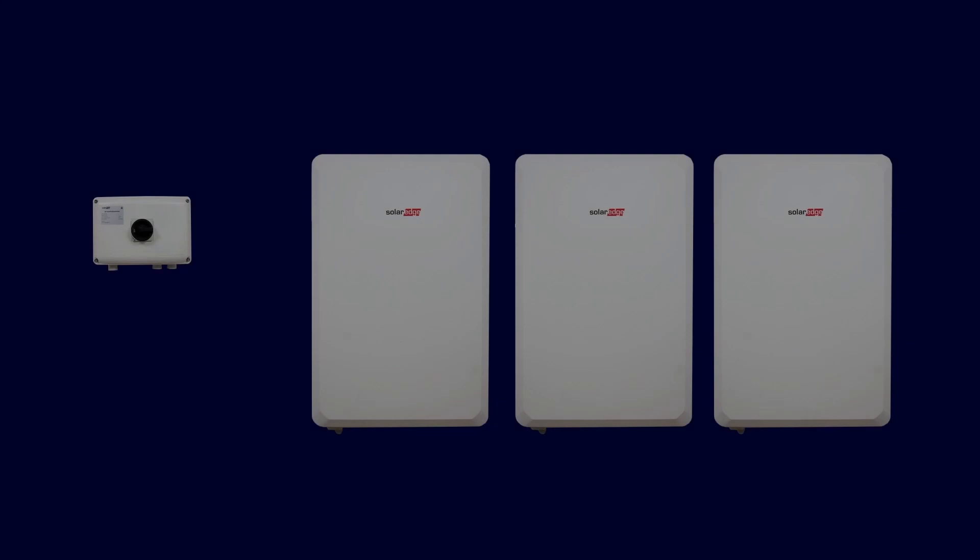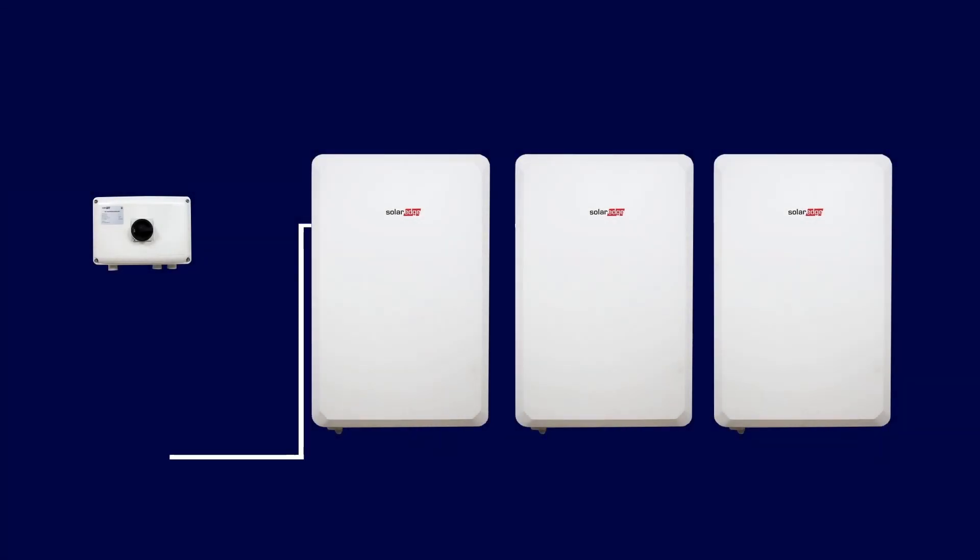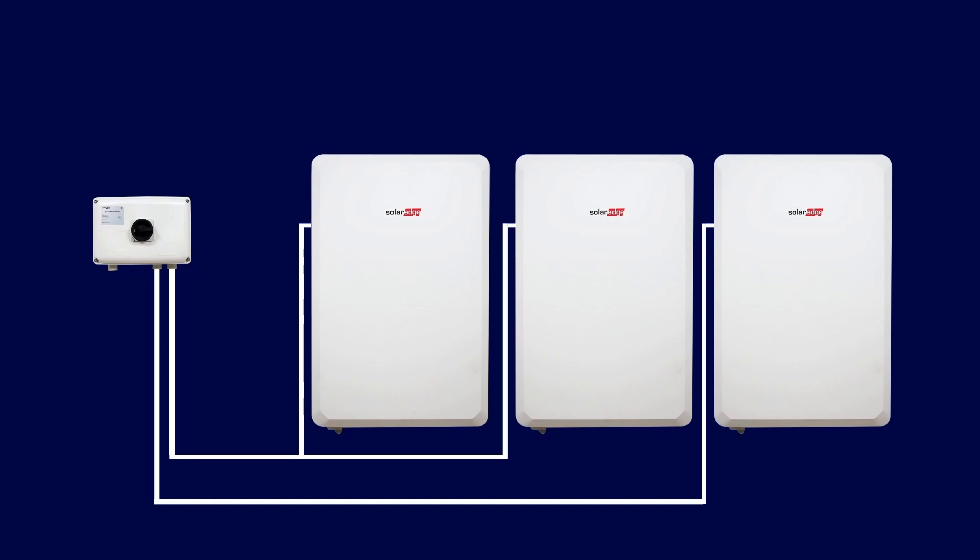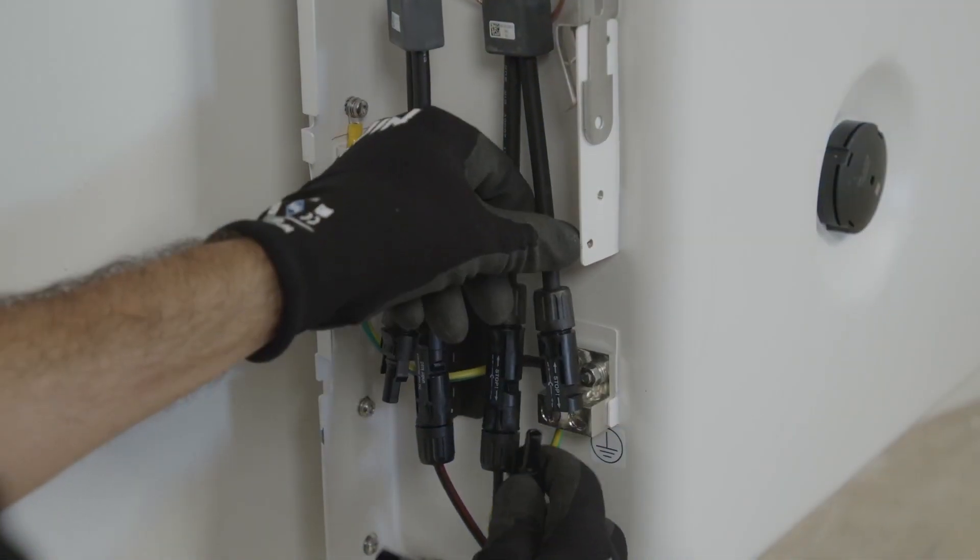If only two SolarEdge batteries have been connected, these can be wired directly to the inverter. If however three SolarEdge home batteries are being used, you'll need to use the DC combiner. So for that, two batteries need to be connected together using the Y branch connector and the third battery directly into the DC combiner.